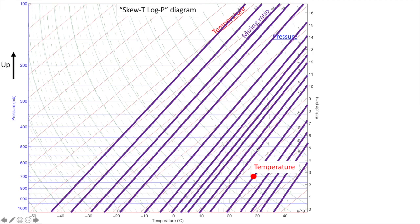If we also measure the dew point temperature of this hypothetical parcel of air, we can plot that in this temperature-pressure space as well. The dew point temperature tells us the amount of water vapor actually in that parcel — in this case 10 grams per kilogram. This means the parcel is subsaturated, since it contains 10 grams per kilogram but could potentially accommodate 15 grams per kilogram. This ratio of 10 divided by 15 is the definition of relative humidity, which is thus around 67% in this case.